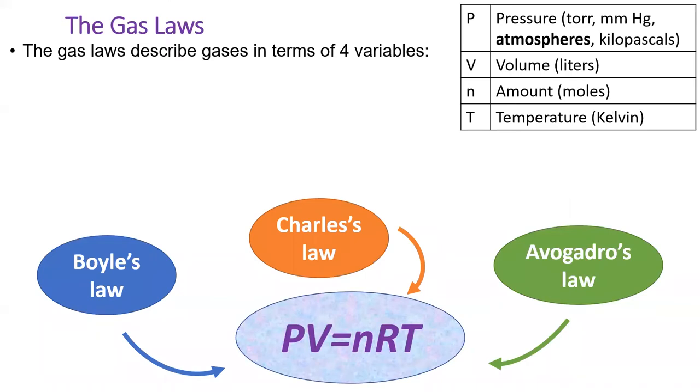In section 10.3, we explored the relationships between the four variables listed in the table. In this lesson, we'll combine these relationships into the ideal gas law, commonly written as PV equals nRT.